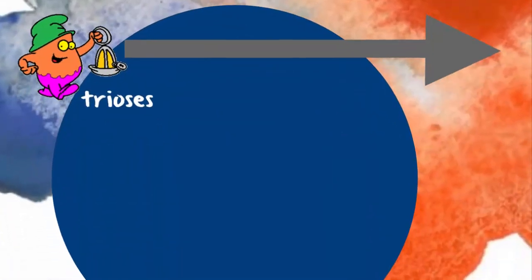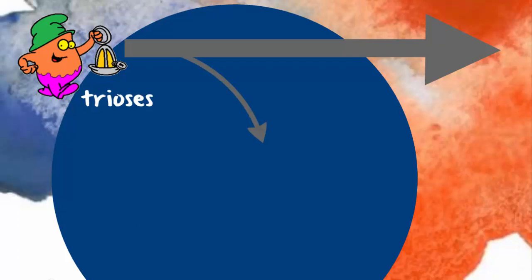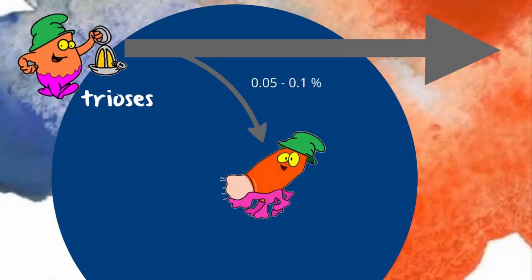Trioses are small in number. They spontaneously do a little chemistry, and it's this chemistry that creates methylglyoxal. It's estimated that around 0.05 to 0.1% of molecules going through the glycolytic process fall apart like this.